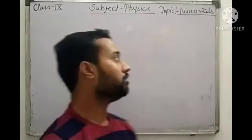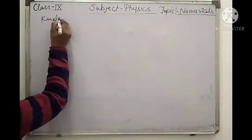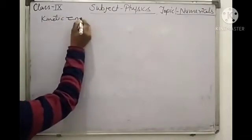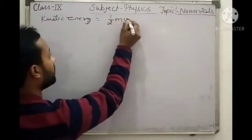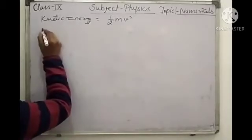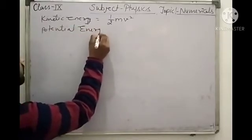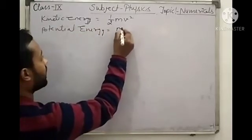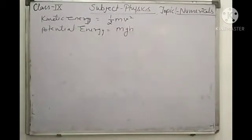First, I will write the formula of kinetic energy. KE equals half mv squared, meaning 1 upon 2, mass into velocity squared. Formula of potential energy: potential energy means mass into acceleration due to gravity into height, that is mgh. These are the two formulae which we are going to use for the numericals.